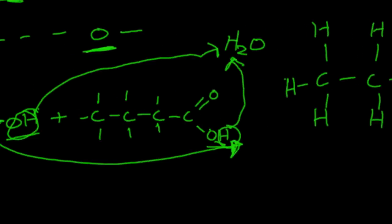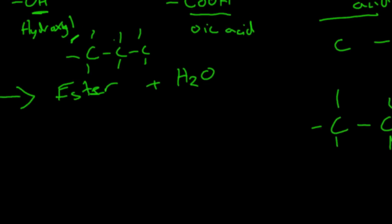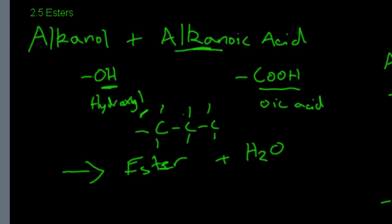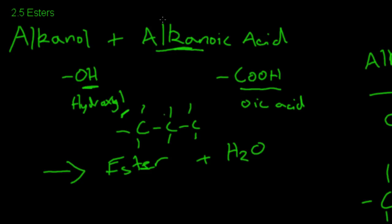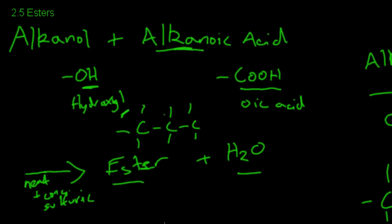Now let's look at the conditions the reaction is formed under. Recapping: it's alkanol plus alkanoic acid going to an ester and H₂O. This happens under heat and concentrated sulfuric acid. In the HSC there's an experiment where you create an ester under conditions of acid reflux — which means you apply heat and then stop the substance from boiling away by refluxing it back in.